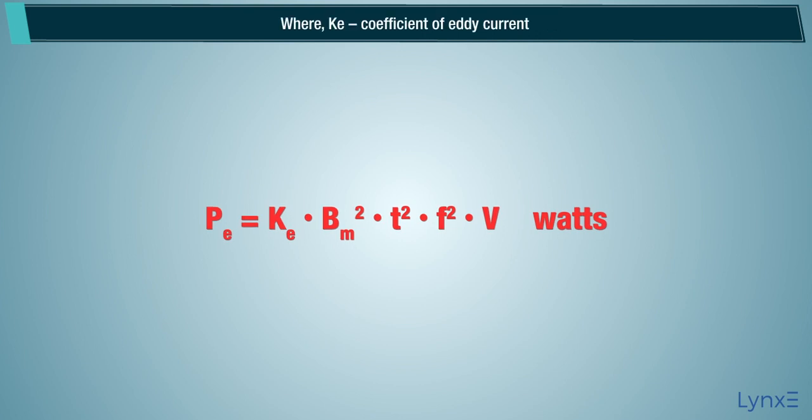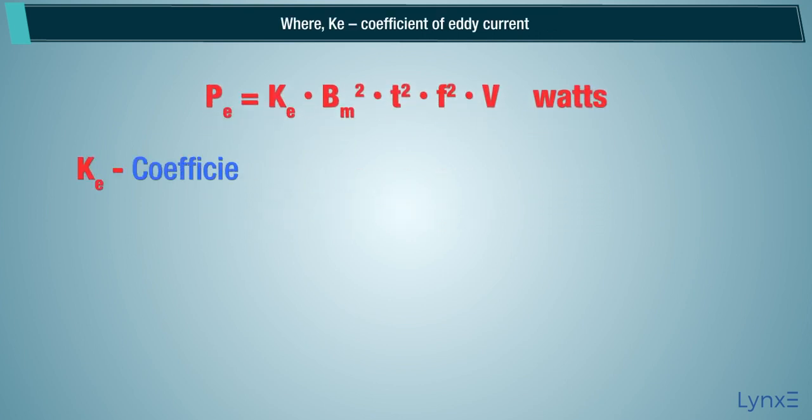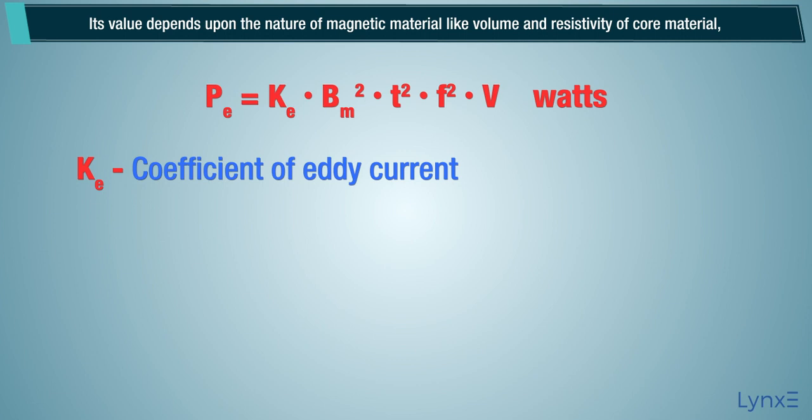Where KE is a coefficient of eddy current. Its value depends upon the nature of magnetic material, like volume and resistivity of core material, the thickness of laminations.